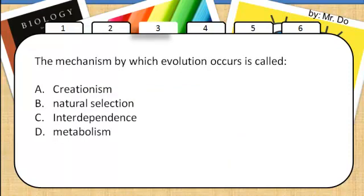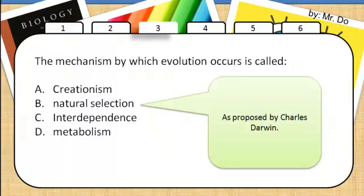Number 3, the mechanism by which evolution occurs is called natural selection as proposed by Charles Darwin.